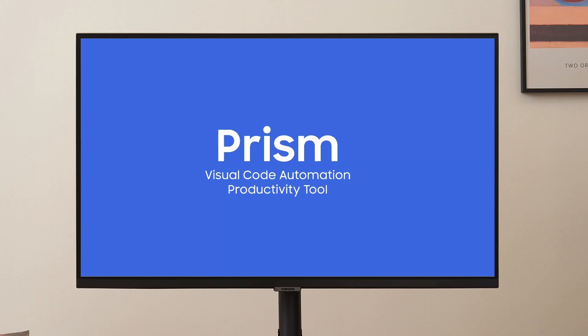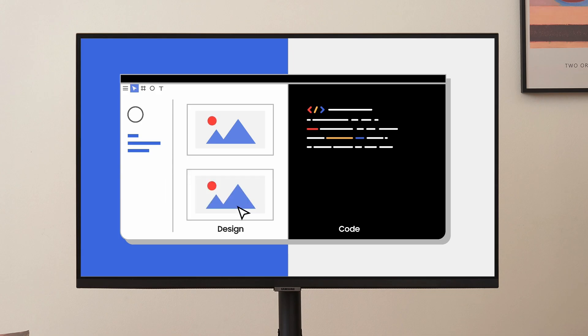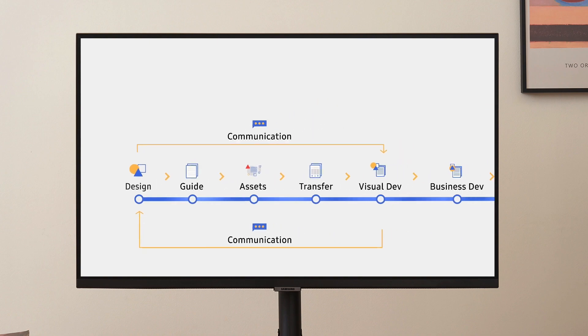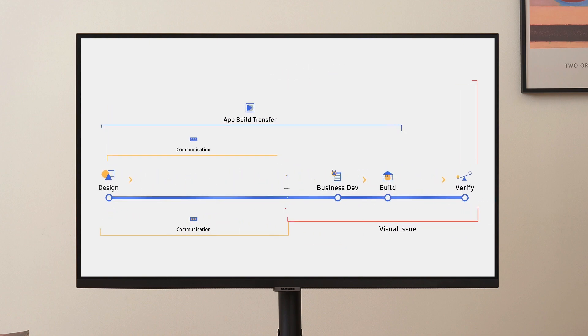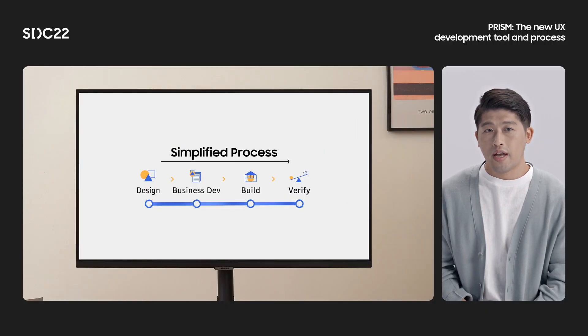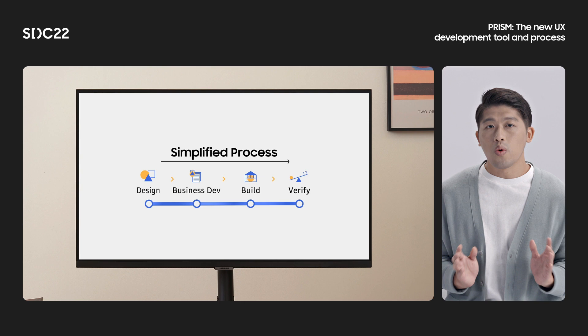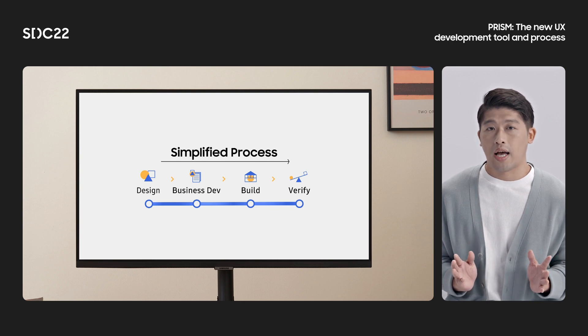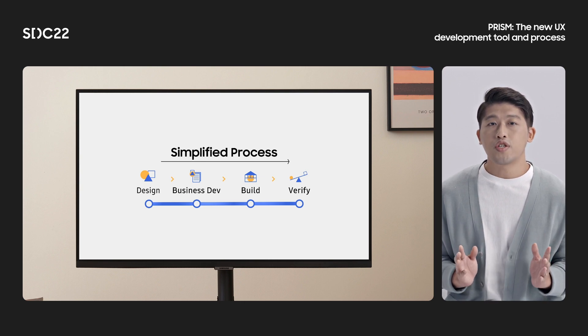In a world of constant online feedback from consumers and rapid consumption, this workflow development process was no longer viable to create the best user experience. For faster handoff, we radically decided to get rid of the GUI guideline and deliver our UI layout and assets in code format. To do this, we developed a PRISM plugin that would extract metadata that could then be converted into code for Tizen. Once a designer exports their design into code format, there is no need to supply developers with separate guidelines.